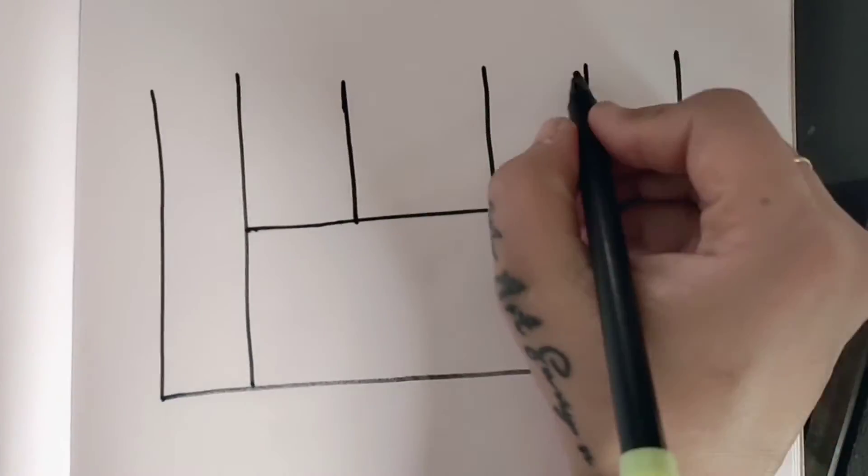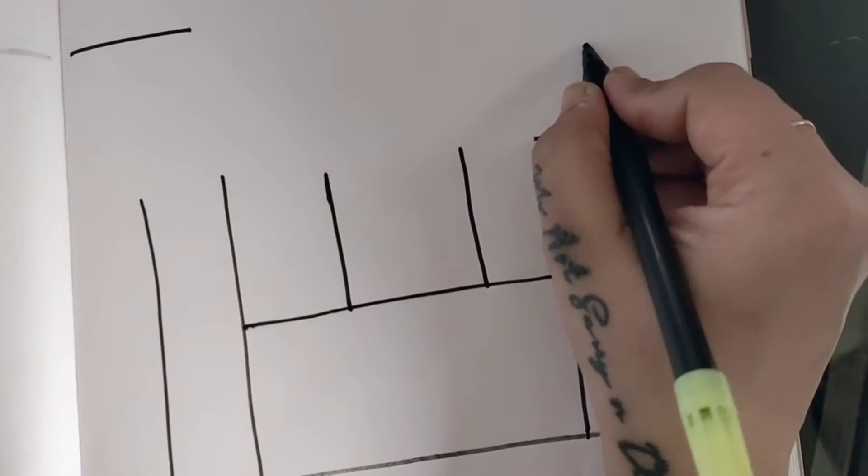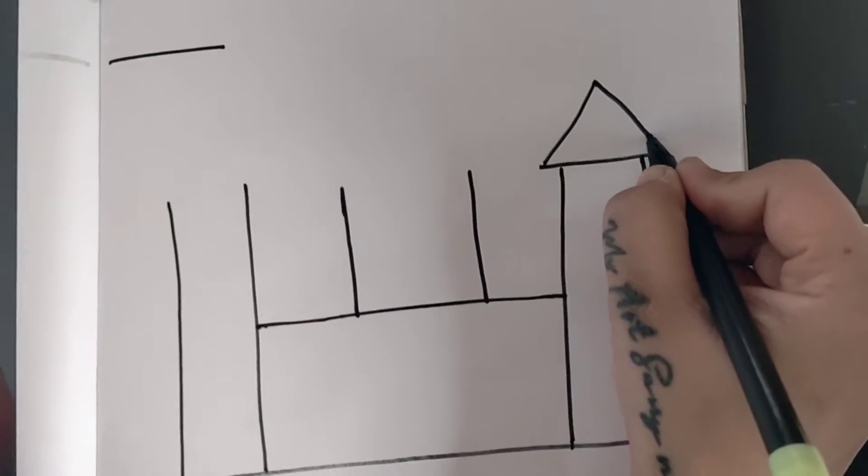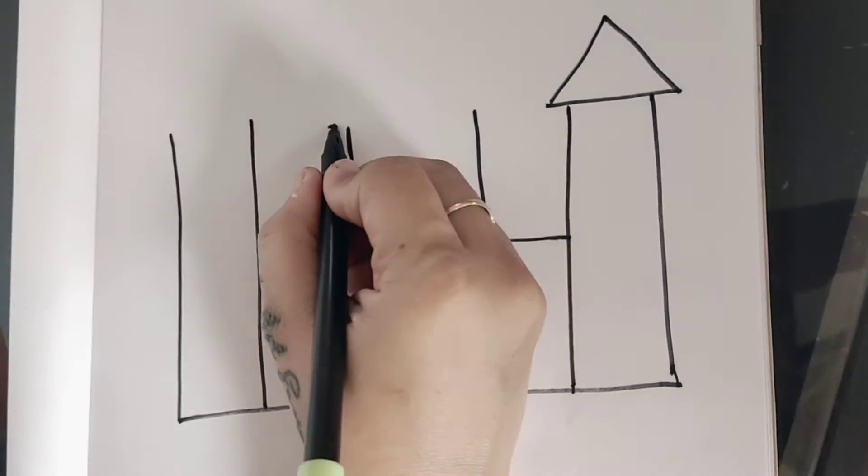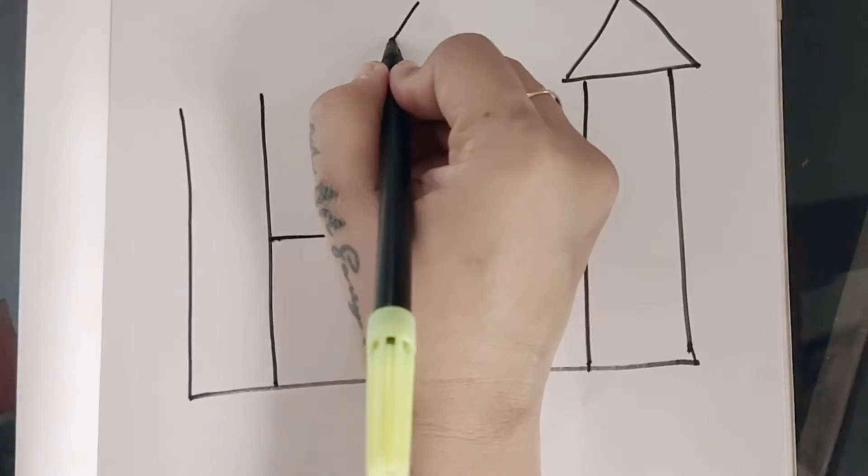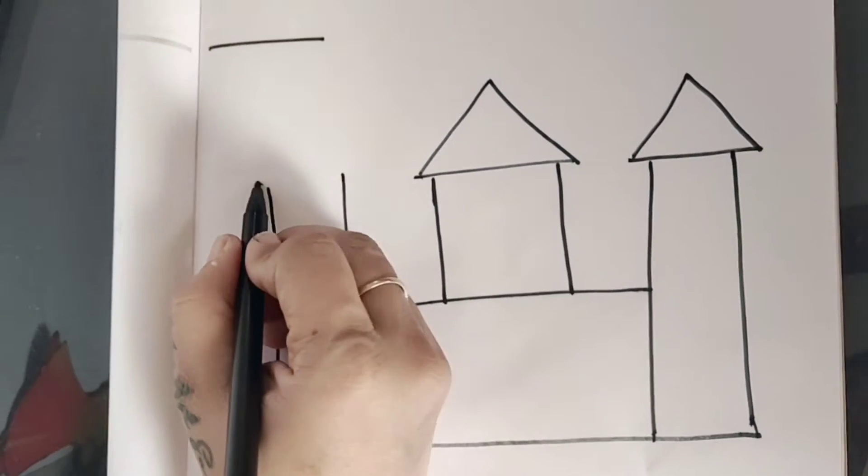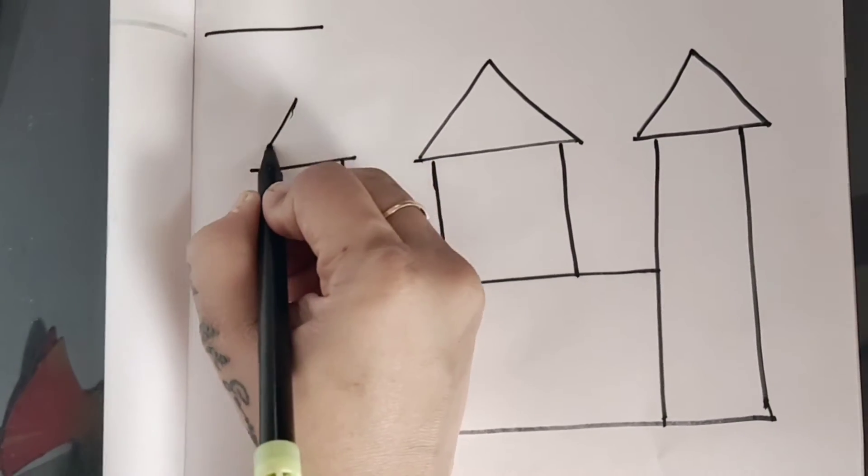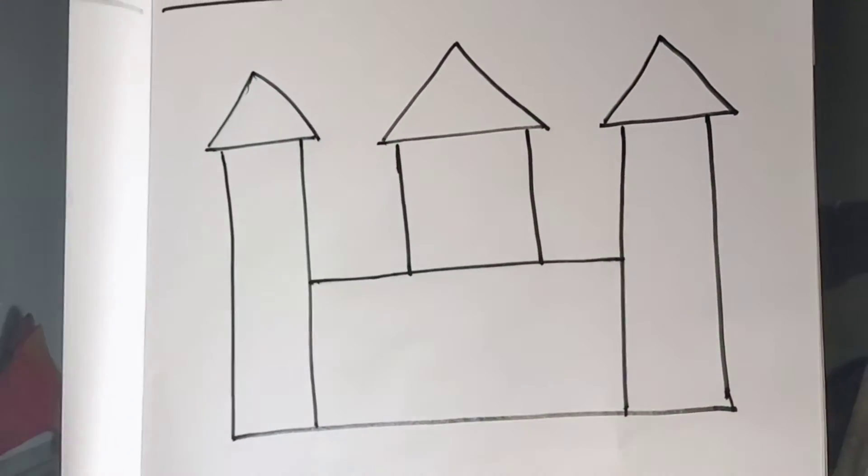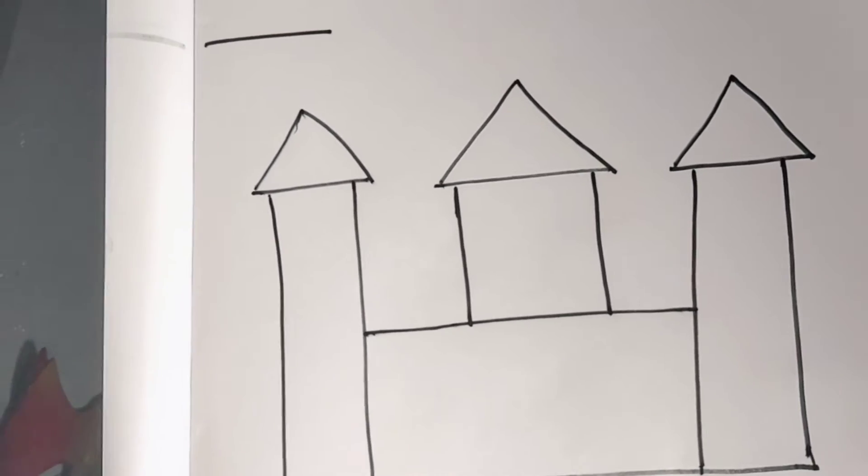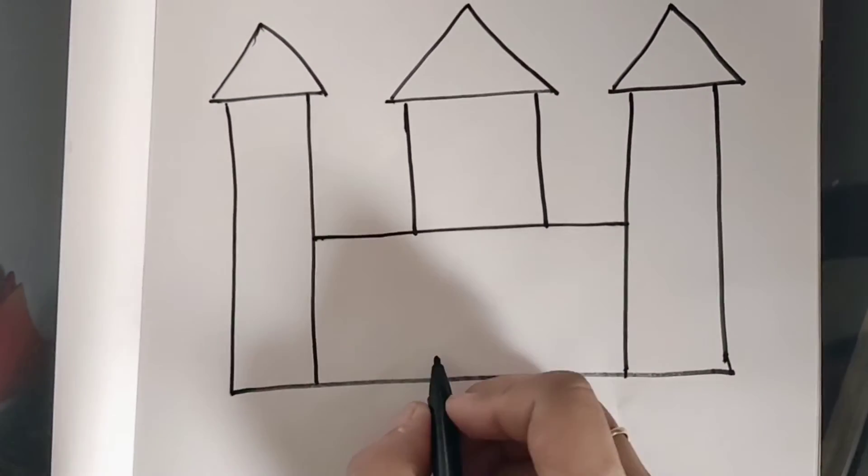Then in tino ke upar humko triangles draw karne hai. See like this. One triangle. Is ke upar bhi hum triangle draw kar dhe like this. Or is ke upar bhi eek triangle draw kar dhe. Right? See? Structure toh ban gaya castle ka.